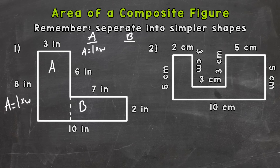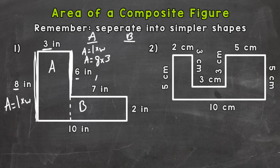My length for A is going to be this 8 all the way up. Don't use this 6, because this 6 doesn't go the full length of the rectangle — you have to be careful which measurements you use. So I'm going to use the 8 and multiply it by the width of 3, and that gives me an area of 24 square inches.